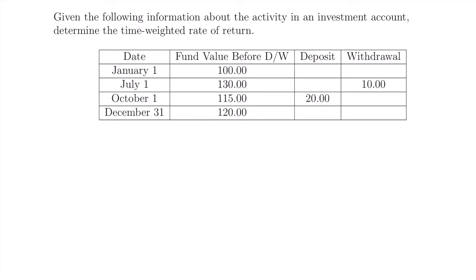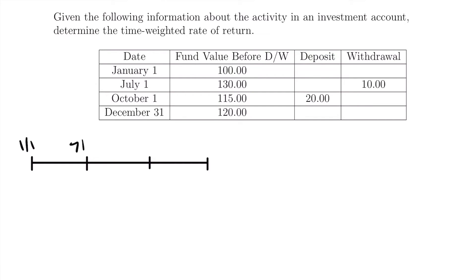To make sure we set up our equation correctly, I'm going to transfer this information into a timeline. We have four moments in time, so I'll draw a timeline with two endpoints and two points in between. Our dates are January 1st, July 1st, October 1st, and December 31st. I'll label those on the timeline as 1-1, 7-1, 10-1, and 12-31.